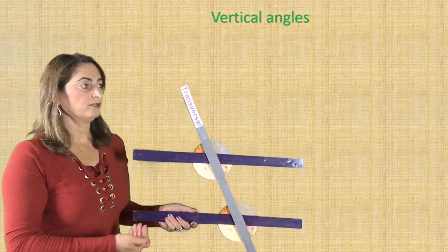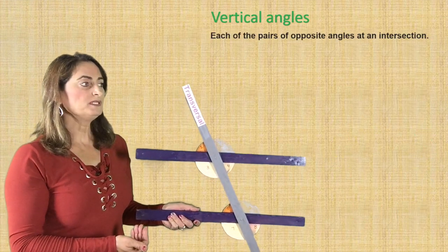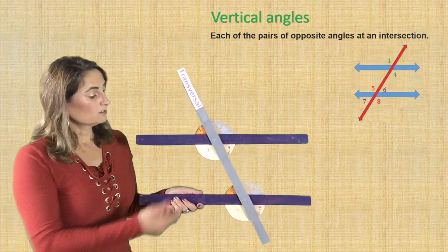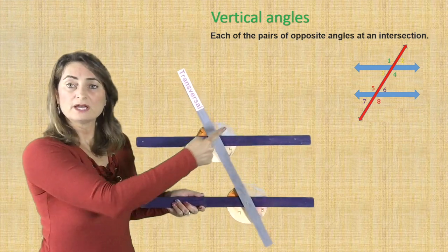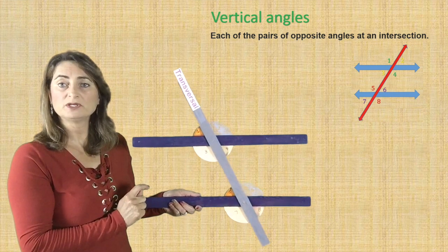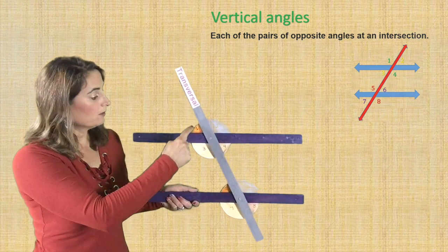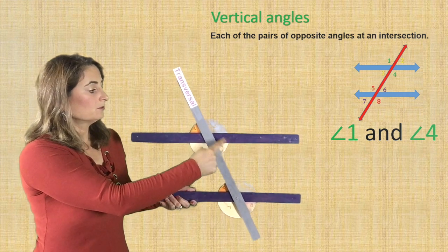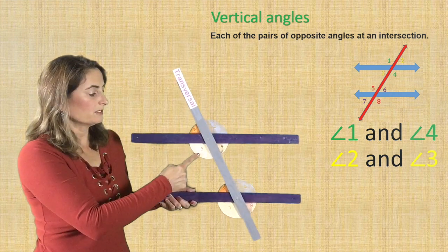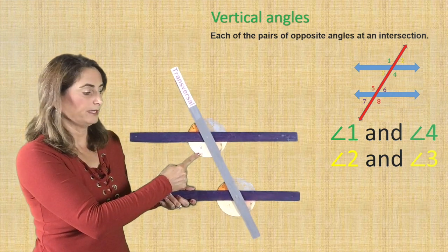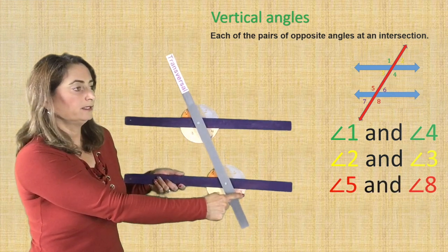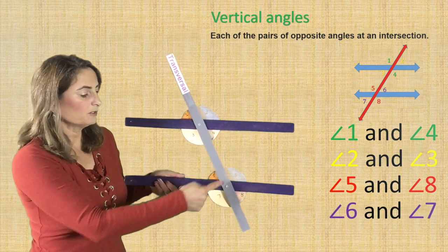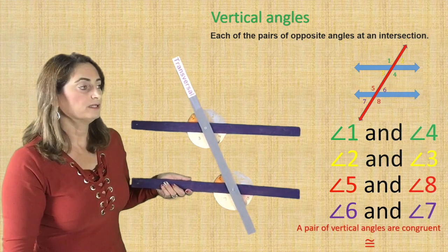Now let's talk about vertical angles. Each pair of opposite angles at an intersection are called vertical angles, and vertical angles are congruent. So here's an intersection — two angles on the opposite side are congruent because they are vertical angles. Angle one and angle four are vertical angles and congruent. Angle two and angle three are on the opposite side of the intersection — they are vertical angles and congruent. Angle five and angle eight are vertical angles. Angle six and angle seven are vertical angles because they are on the opposite side of the intersection.